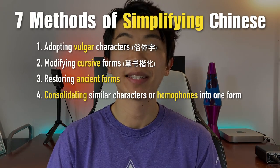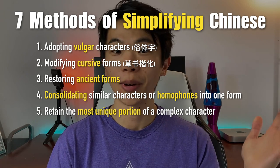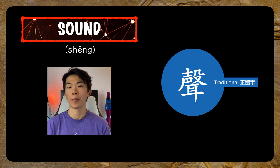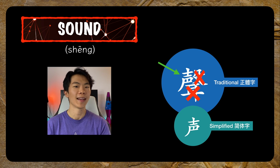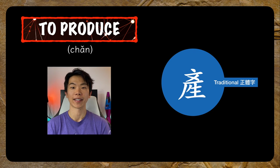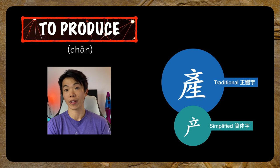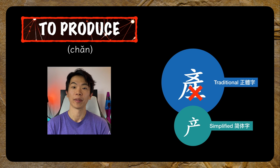The next three methods include more modern simplifications — so of the 20% of characters simplified after 1949, many of them use these methods. The fifth method is to take the most unique portion of the character and delete the rest. For example, in the character 声 (sheng), the upper left portion is unique and unlike any other characters, so we take that and delete the rest. This particular character has been around since the Yuan Dynasty. The character 产 (chan), on the other hand, is a modern simplified character using the same method.